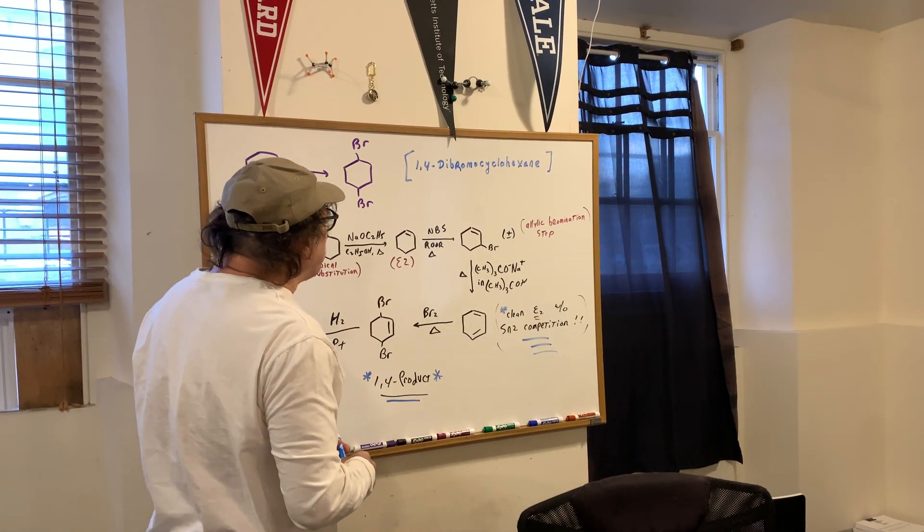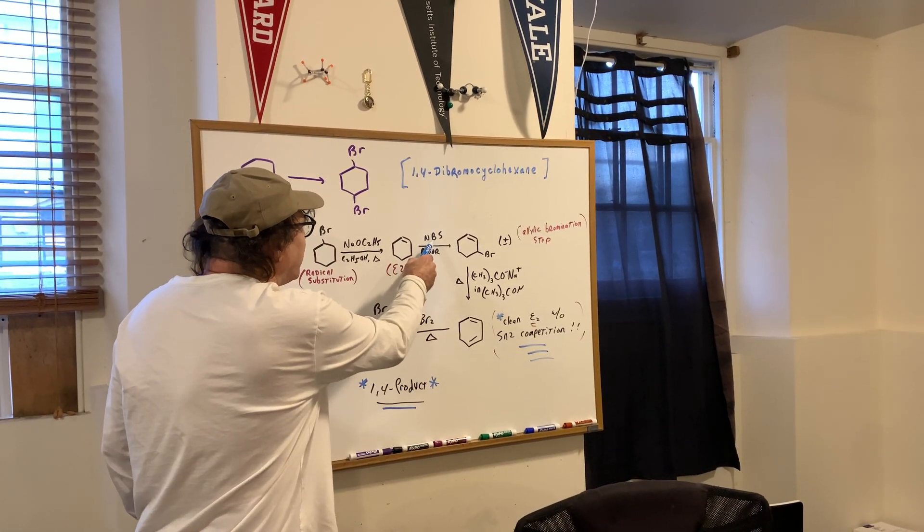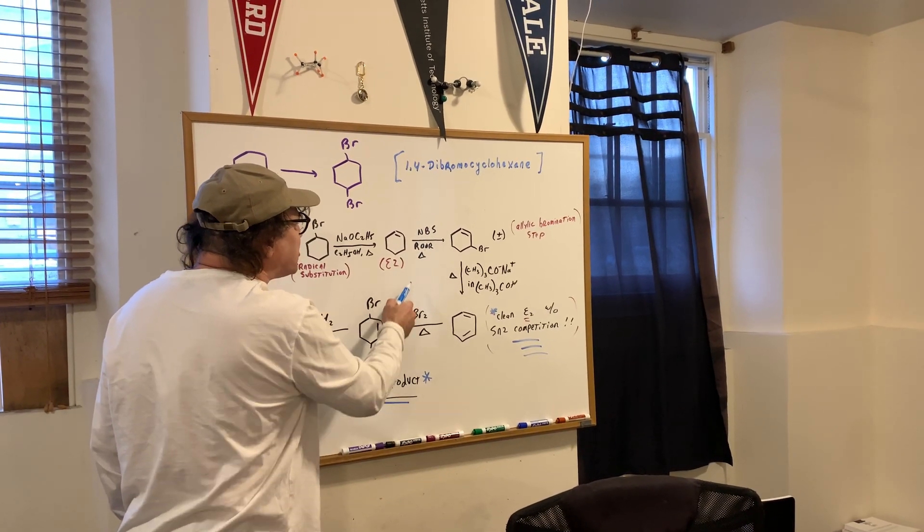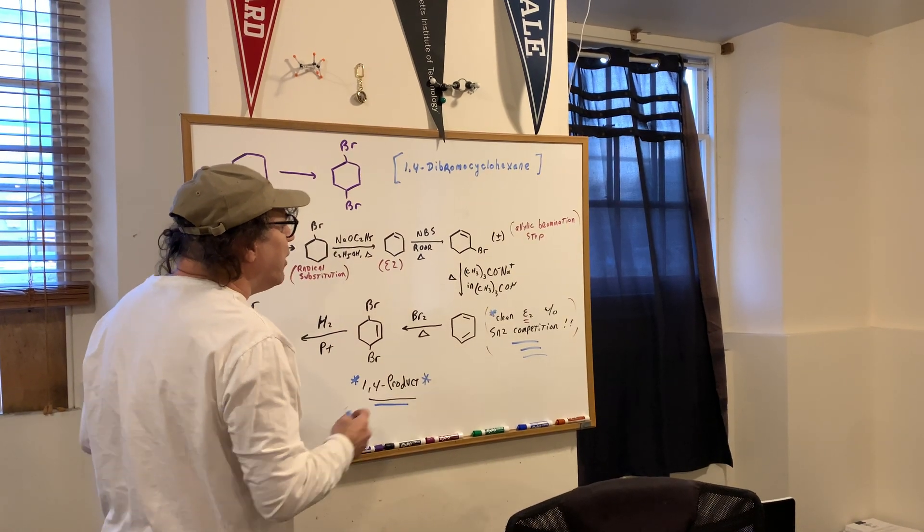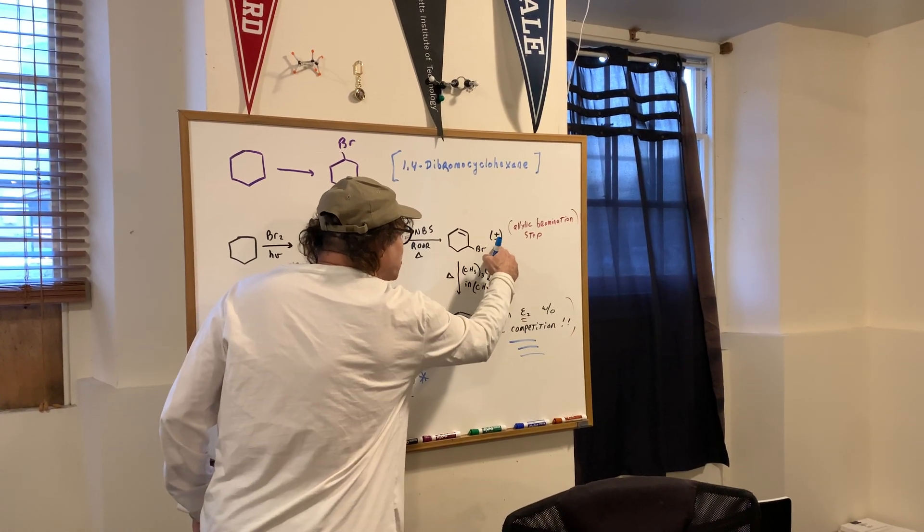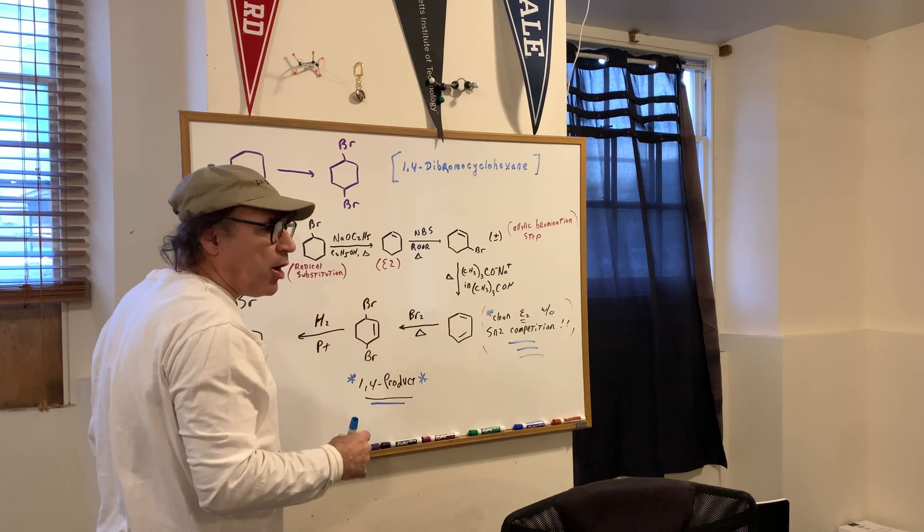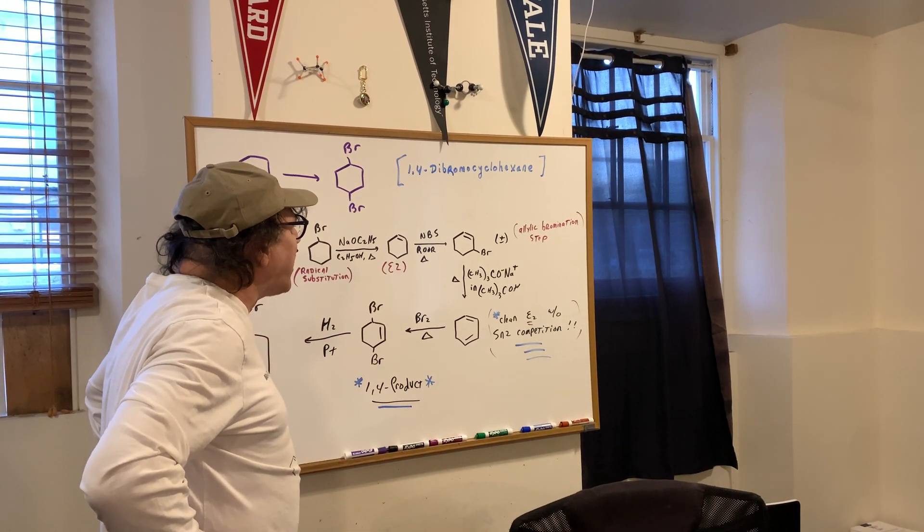Once I've got the E2 product, what I'm going to do is hit it with NBS oxide and heat, and that does an allylic bromination. For the big shots in the group, I just wrote plus minus, because where the bromine has landed, you generated a chiral carbon.